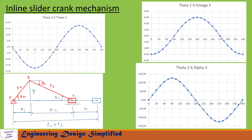Looking at the graphs: theta2 vs. theta3 — theta3 is 0 at 0° and 180°, negative between 0° and 180°, and positive between 180° and 360°. In the theta2 vs. omega3 graph, omega3 is negative from 0° to 90°, positive from 90° to 270°, and negative again after 270°.